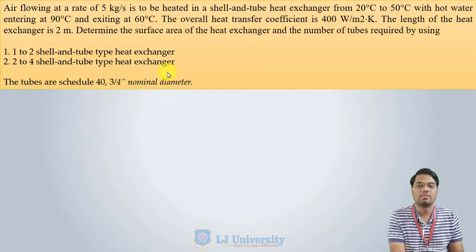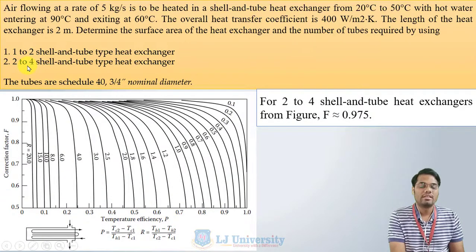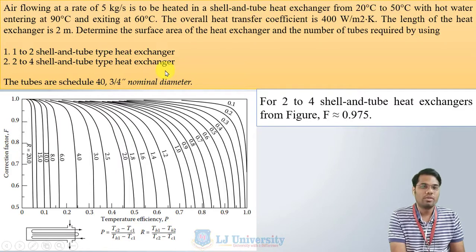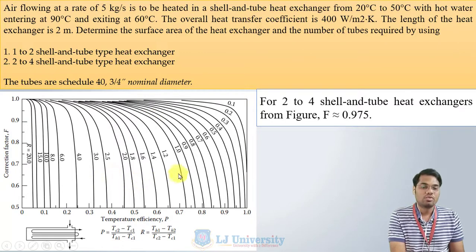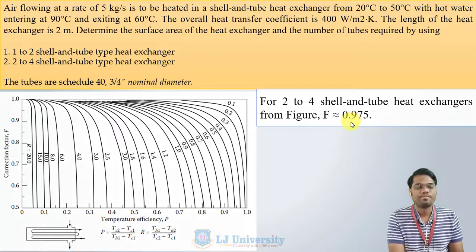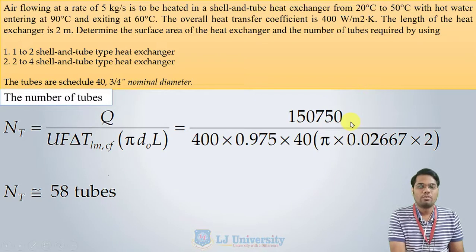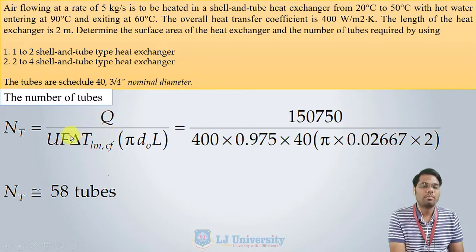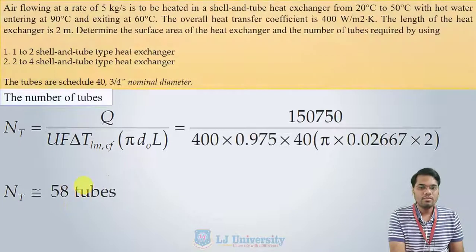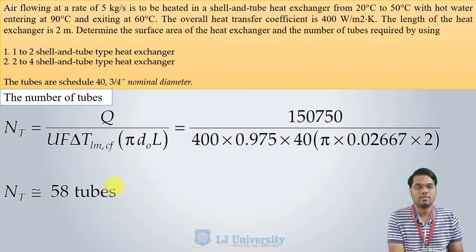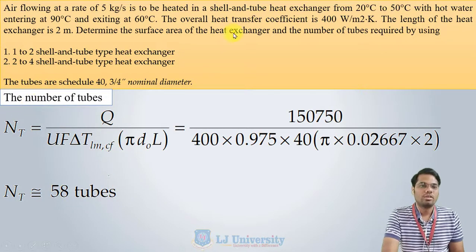For Case 2 — the 2-4 shell and tube heat exchanger — Q, P, and R remain the same, but a different graph is used. According to the values of P and R, the correction factor F is approximately 0.97. Using the same equation, the number of tubes required is approximately 58 tubes. These are the results for both configurations.